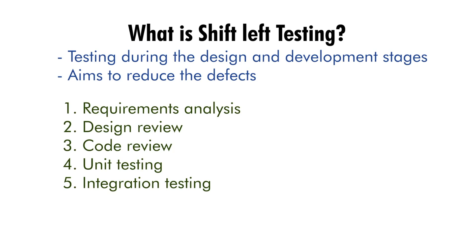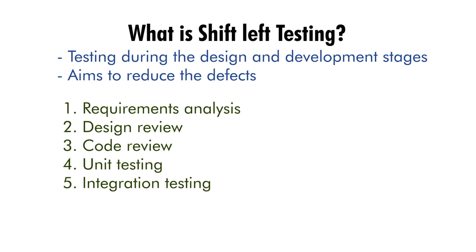Code review involves reviewing the code to ensure that it meets the design and the requirements, and defects can be caught early in the process. Unit testing involves testing individual units of code to ensure that they function correctly and identifying defects early in the process.